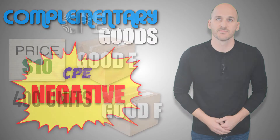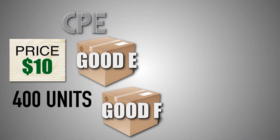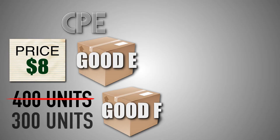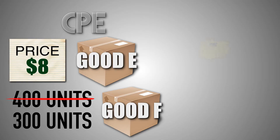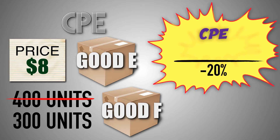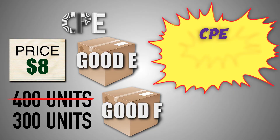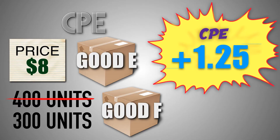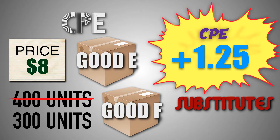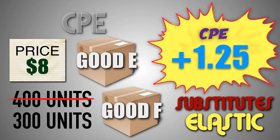Let's do a little practice. Suppose that the price of good E decreases from $10 to $8, and the demand for good F decreases from 400 units to 300 units. When the price of good E fell by 20%, consumers decrease their consumption of good F by 25%. This gives us a cross-price elasticity coefficient of positive 1.25, which means that good E and good F are substitute goods, and the demand between good E and good F is cross-price elastic.